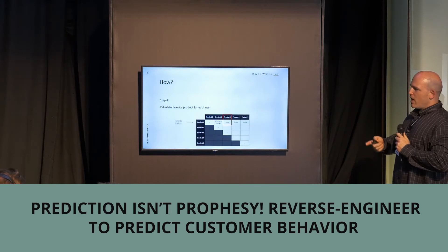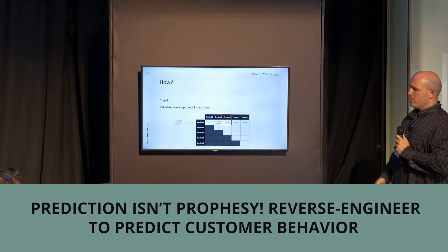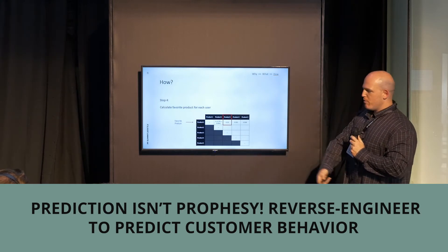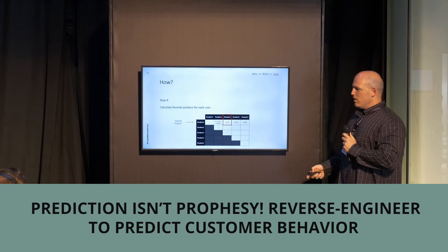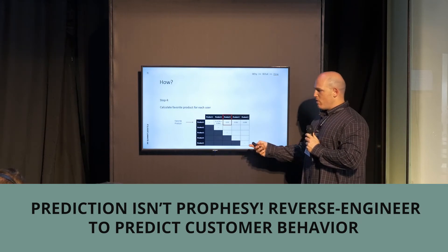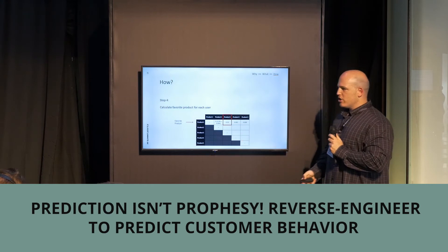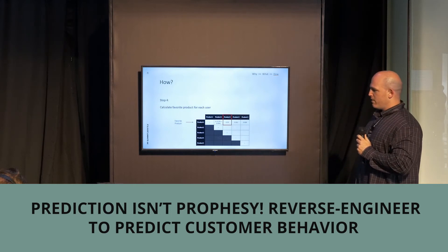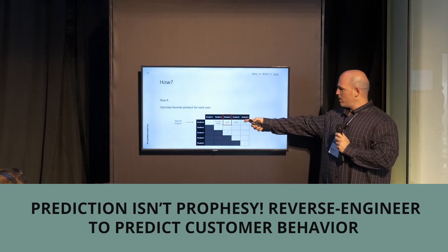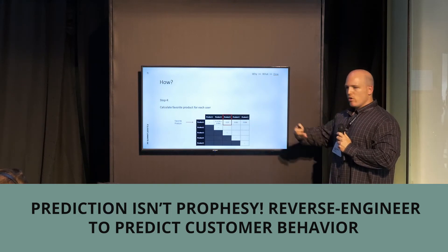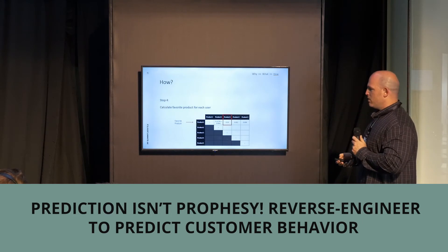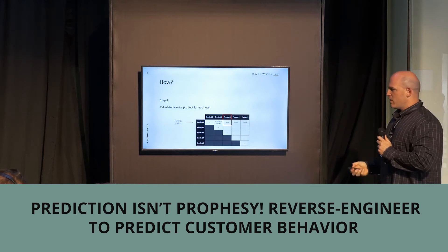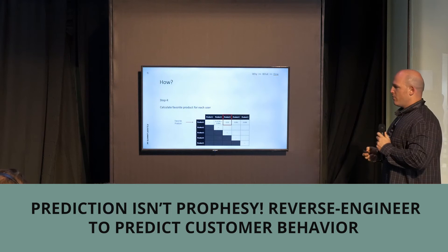Step four: calculate each customer's favorite product, which is easy to compute using a spreadsheet or SQL query. Let's say my favorite product is product number one. After creating the matrix, doing the calculations, and normalizing, we get a final ratio for each product. We can take the product with the highest ratio — in this case product three — and recommend it as the top best product. But we can also take the top five, top ten, or top fifty products, depending on the use case. This concludes the first DIY.